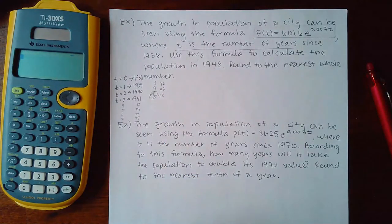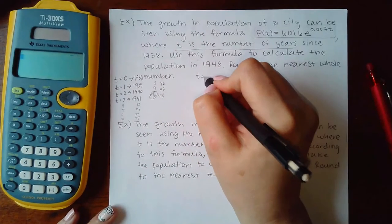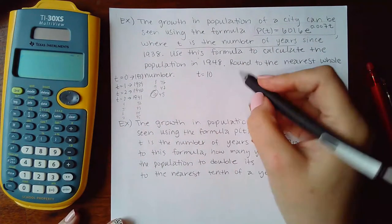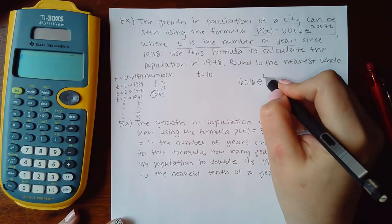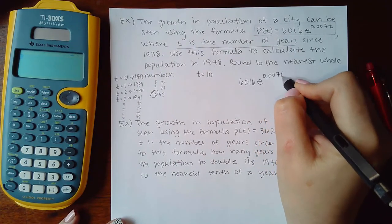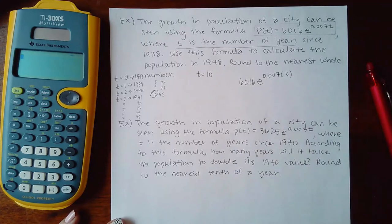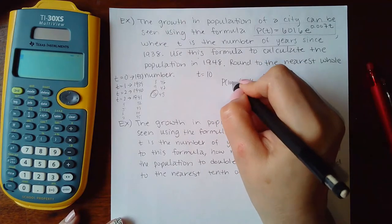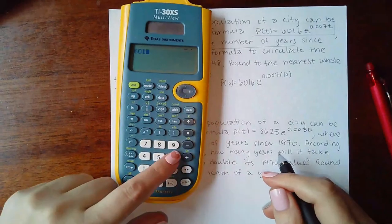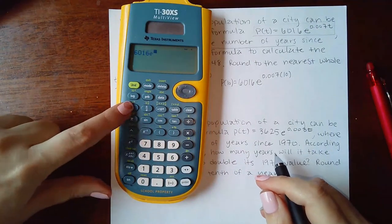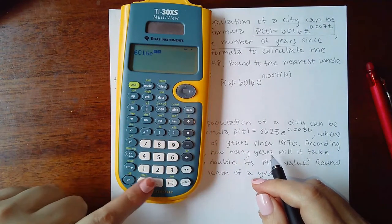So my time here that I need to figure out is time 10. So I'm literally just going to take my expression that I have and I'm going to plug in 10 for t. So the population in 10 years will be 6016 times e to the 0.00007 times 10.